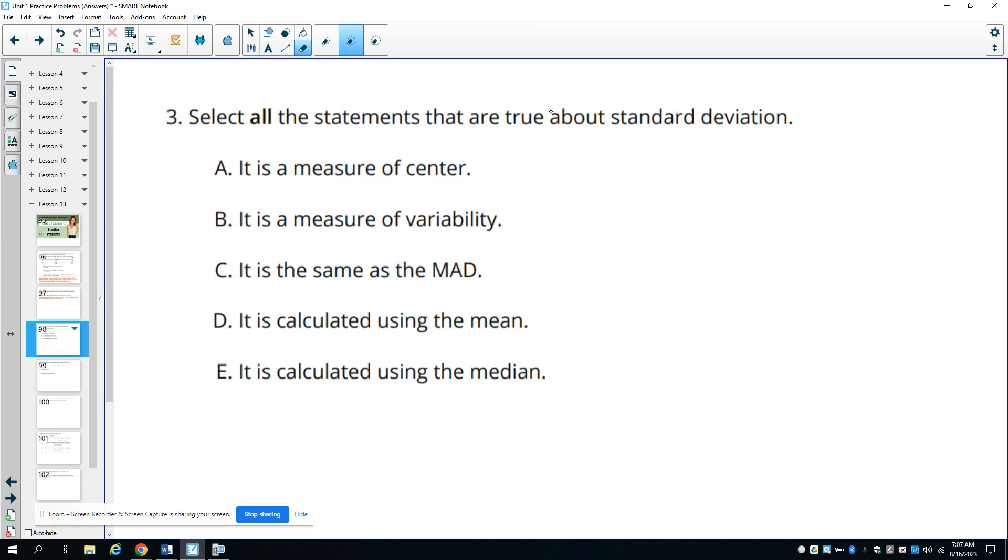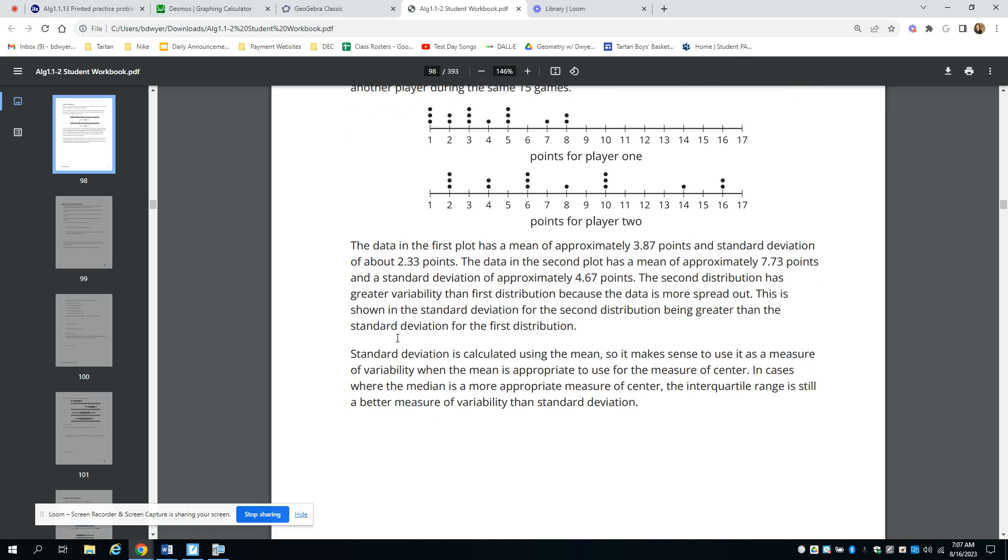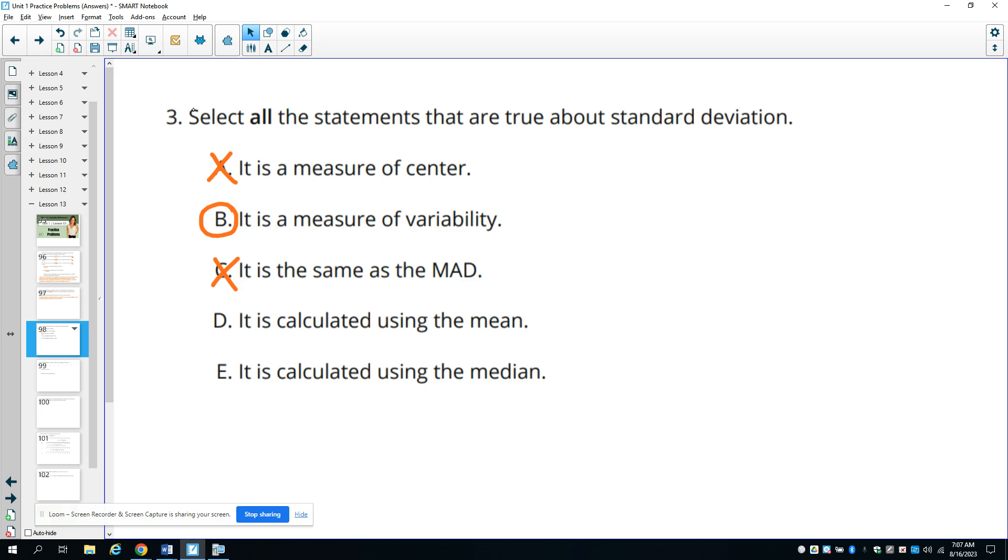Then number three says select all statements that are true about the standard deviation. So it's a measure of center is false. It's a measure of variability is true. It is not the same as the MAD. It is calculated using the mean or it's calculated using the median. And if you forgot this, you could always look back at your lesson summary. If you get to this bottom paragraph here, it says the standard deviation is calculated using the mean. So it tells us the answer to that in our summary. So it is calculated using the mean, not the median.